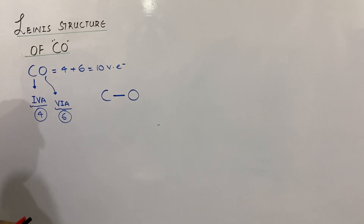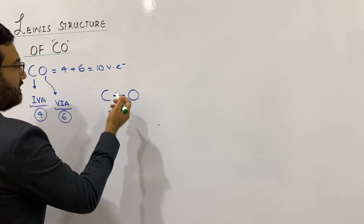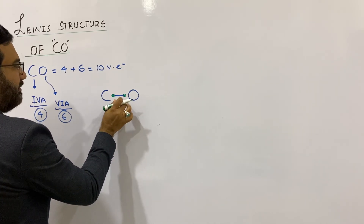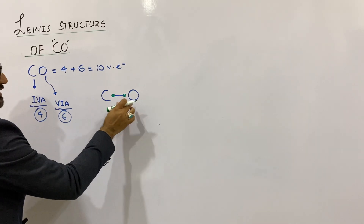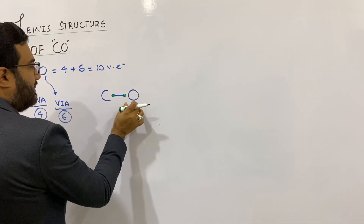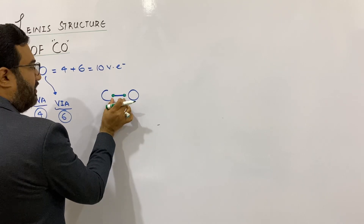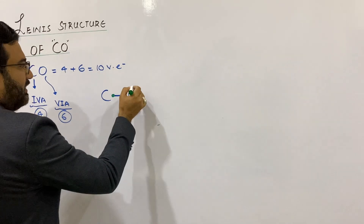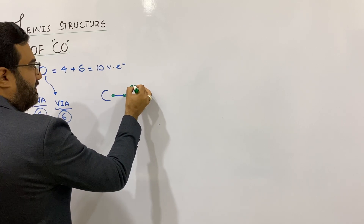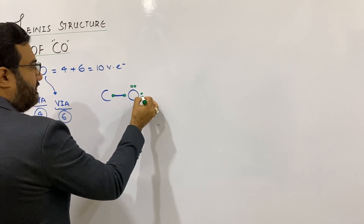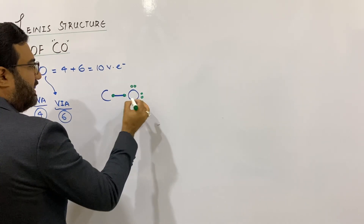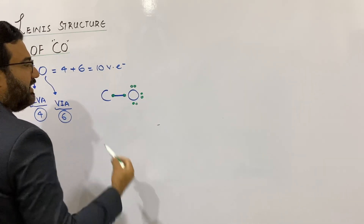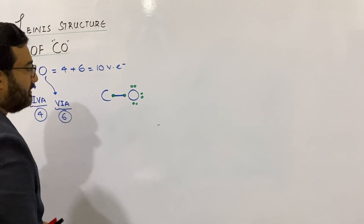After joining through a single bond, you will complete the octet of the bonded atoms. A single bond means there is one bond pair of electrons. First, let us complete the octet of oxygen. Oxygen already has two electrons in its valence shell in the form of one bond pair, and it will have six more electrons in the form of three lone pairs, completing its octet — 1, 2, 3, 4, 5, 6, 7, 8 electrons in the valence shell of oxygen.